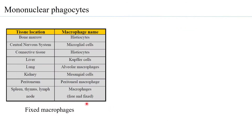When macrophages go into different tissues, their name changes depending on the tissue in which they are located. In bone marrow and connective tissues they are called histiocytes; in the central nervous system, microglial cells; in the liver, Kupffer cells; in the lung, alveolar macrophages; in the kidney, mesangial cells; in the peritoneum, peritoneal macrophages; and in the spleen, thymus, and lymph nodes they are called macrophages. Fixed macrophages can thus be given different names depending on their tissue location.